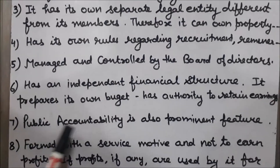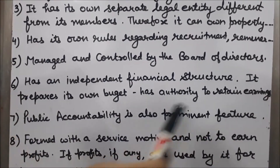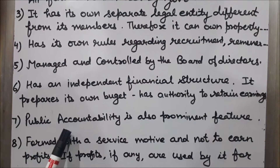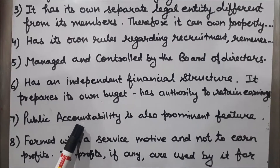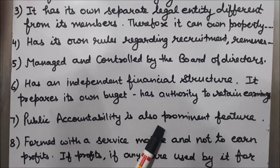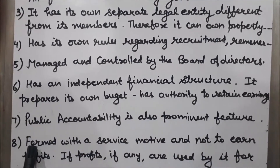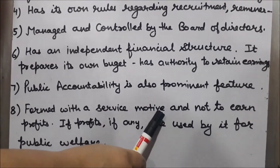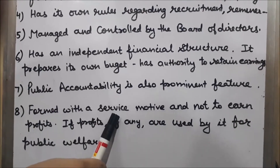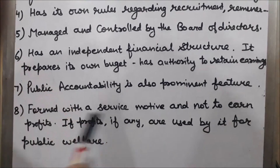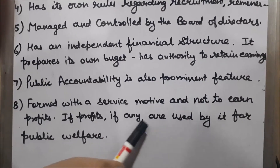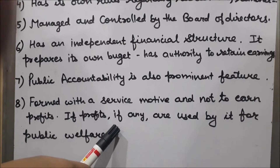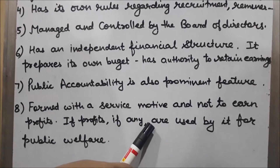Public accountability is also a prominent feature. Public corporations are accountable to the general public through parliament, just like departmental undertakings. Another feature is that public corporations are formed with a service motive — their main motive is to provide services to society and not to earn profits. If any profits are earned, they are used for public welfare.